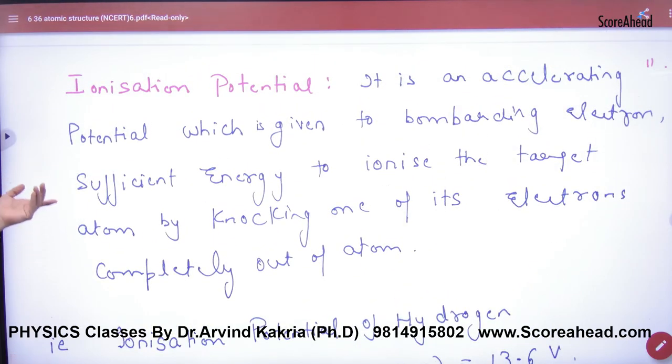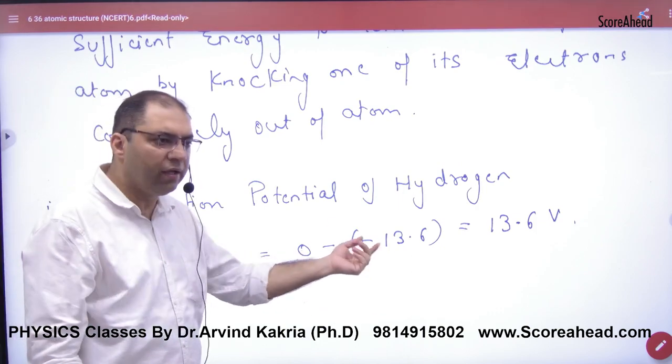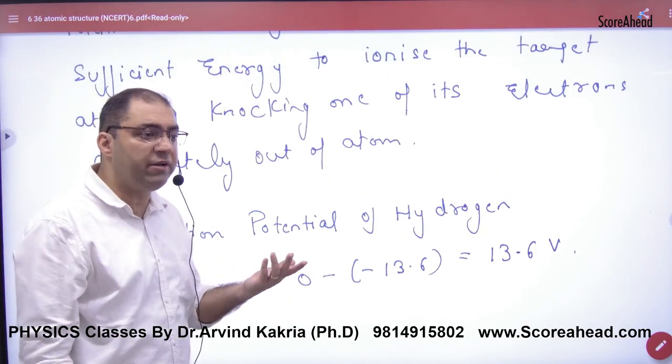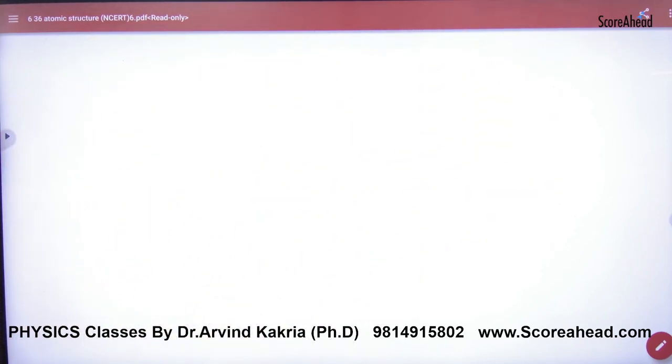And ionization potential - what was the meaning? It starts from zero because ionization energy is 13.6 electron volts to remove the electron. So 13.6 volts will be the ionization potential.